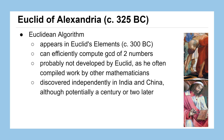Euclid of Alexandria helped develop the Euclidean algorithm. It appeared in his book called Euclid's Elements back around 300 BC, and it can really efficiently compute the greatest common divisor of two numbers, which is going to be very helpful for our work.